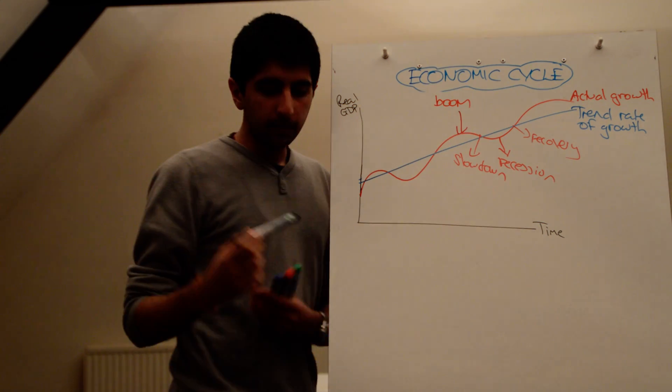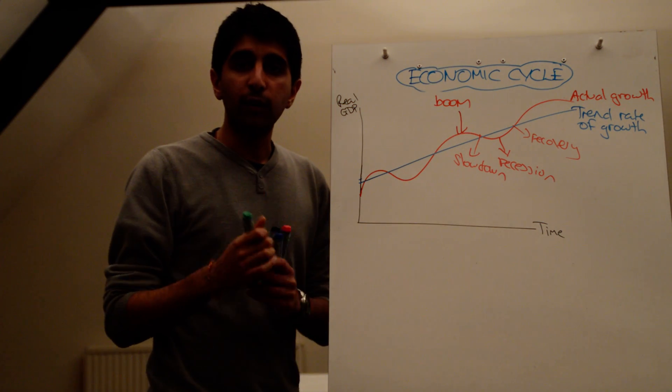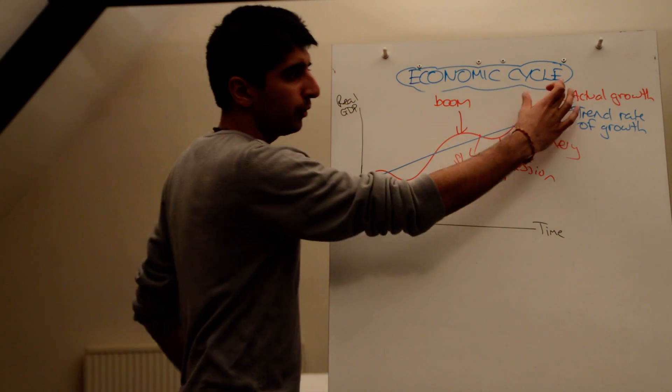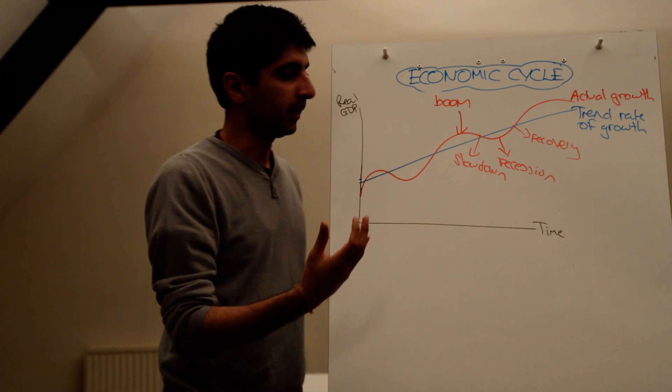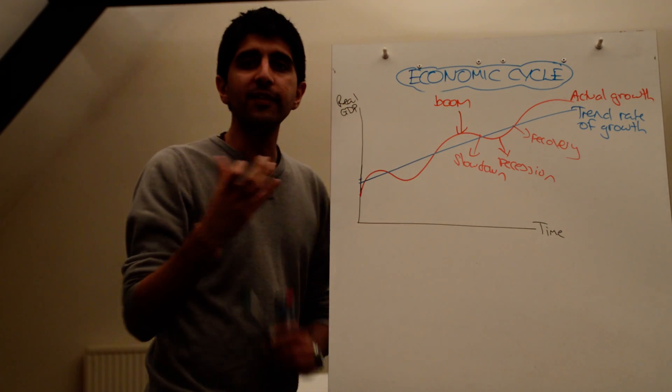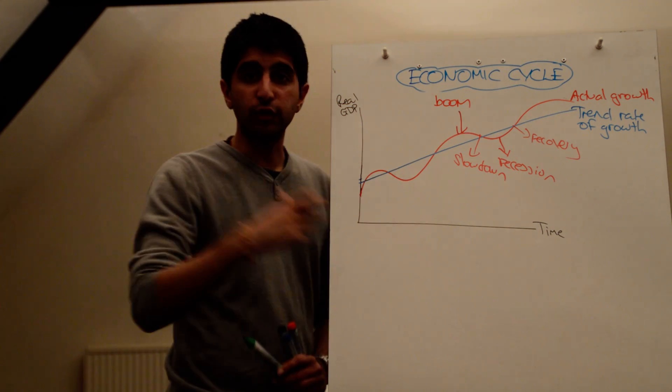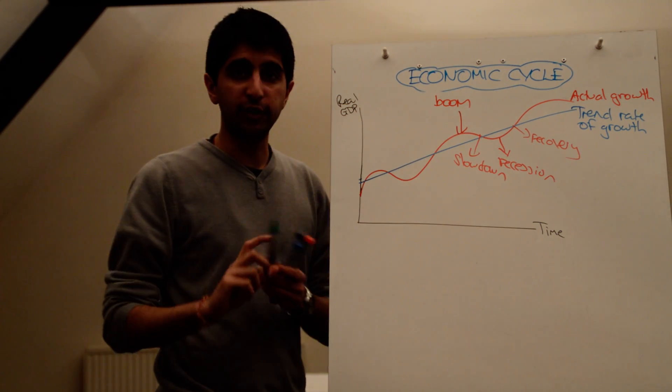Something else you can get from this diagram are the idea of what output gaps are. So you can see here that actual growth is never really a smooth upward line. Actual growth can deviate from the trend rate of growth. Actual growth can be below the trend rate of growth and can be above the trend rate of growth too.